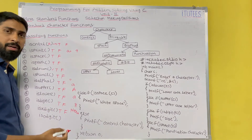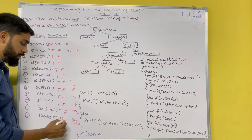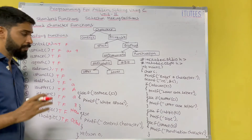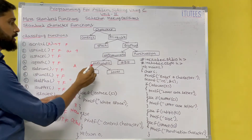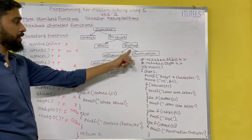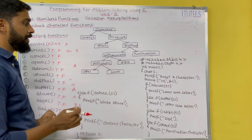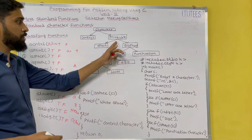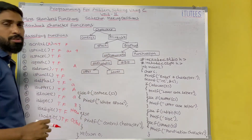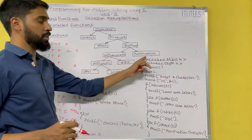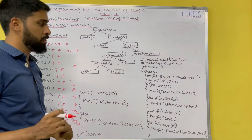For example, if I enter capital A — then isprint is true, isgraph is true, isalnum is true, and isupper is true. If I give a digit, then isprint is true, isgraph is true, isalnum is true, and isdigit is true. If I give a punctuation, then isprint is true, isgraph is true, and ispunct is true.